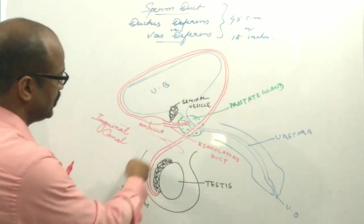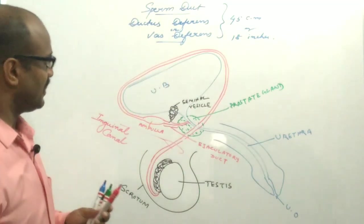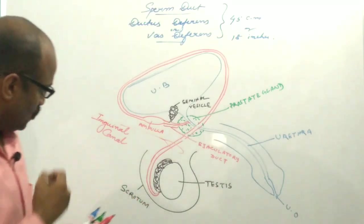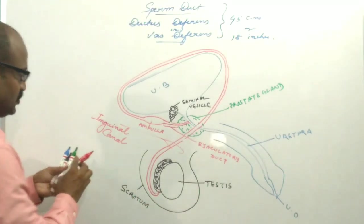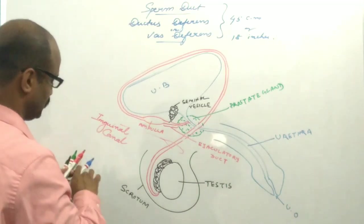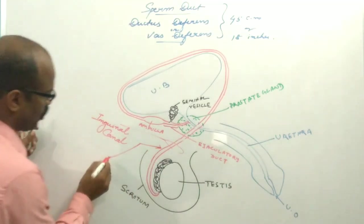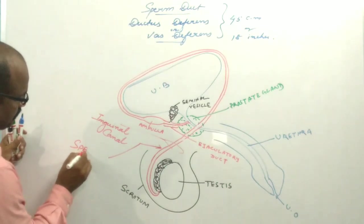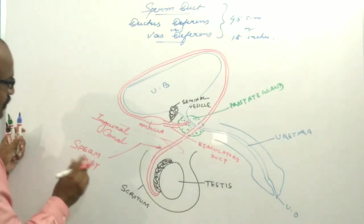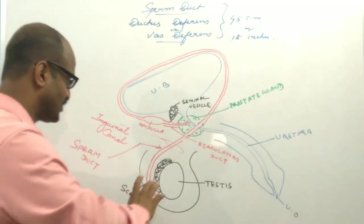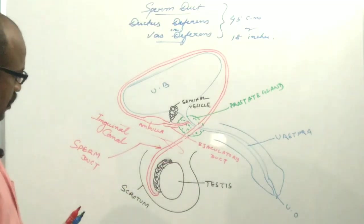So this is the total structure of the vas deferens. Some part of the sperm duct is actually restricted inside the scrotum.